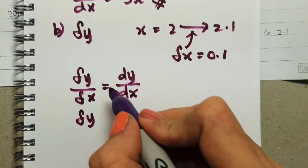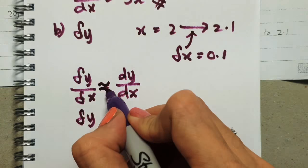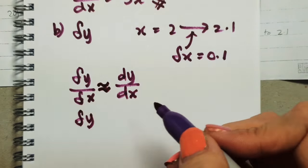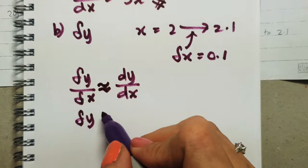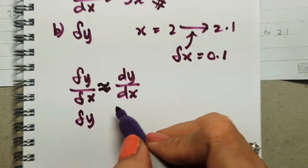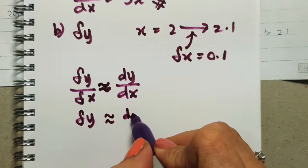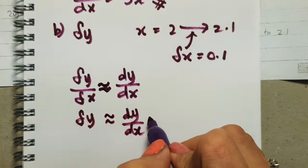To find del y, they're not exactly equal unless it is a limit. Del y is approximately equivalent to dy/dx times the del x.